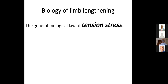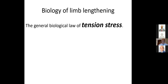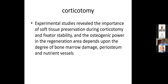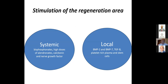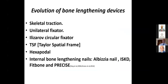The second point: the biology of limb lengthening. Do we have any change since Ilizarov's general biologic law of tension stress? No, we didn't have any advance. We still have the same thing: osteotomy or corticotomy, three stages — latency period, distraction, and consolidation phase. We are trying to stimulate the regeneration area not just by fixation but using systemic methods like bisphosphonates, or local bone morphogenic proteins and PRP. What's the evolution? We can talk about the evolution of bone lengthening devices, not the limb lengthening biology itself.